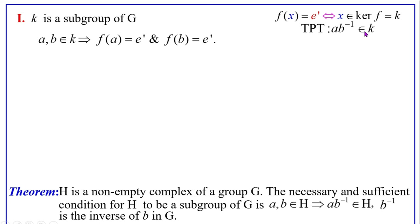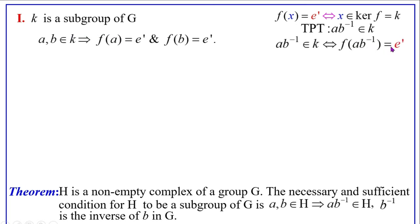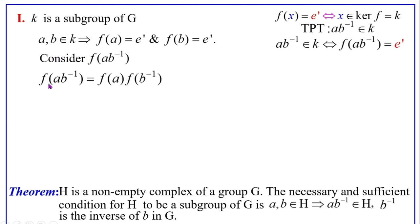We must show A·B⁻¹ belongs to K. An element X belongs to K if and only if F(X) equals E'. So to prove A·B⁻¹ belongs to K, we must show F(A·B⁻¹) equals E'. Consider F(A·B⁻¹): since F is a homomorphism, F(A·B⁻¹) equals F(A)·F(B⁻¹).